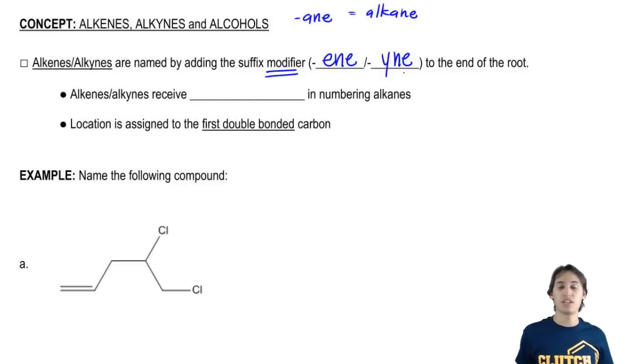So now all of a sudden a hexane becomes a hexyne if it has a triple bond in it. Does that make sense? Cool. So then let's talk about some important rules here.